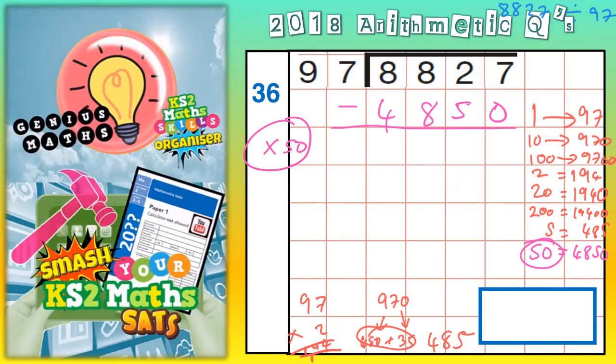And we'll just write the chunk of 50 at the side so we don't lose count of what we're doing. So, 7 subtract nothing is 7. 2 take away 5 you can't do, so borrow. 12 take away 5 is 7. 7 take away 8 we can't do, so borrow again. Notice there's quite a bit of borrowing on this one. This is one of the final questions. 17 take away 8 is 9. And 7 take away 4 is 3.